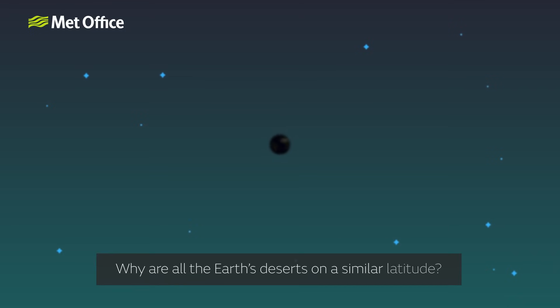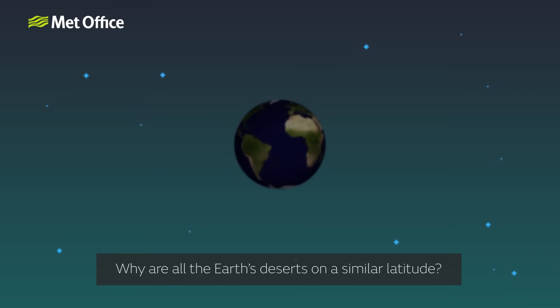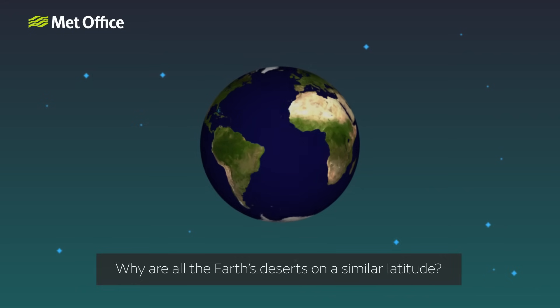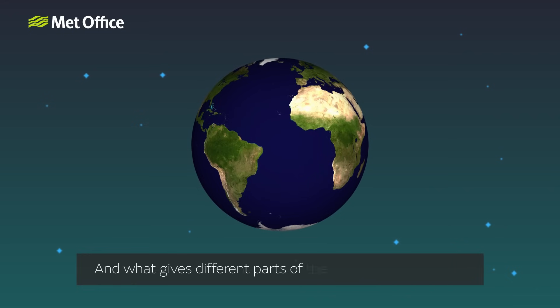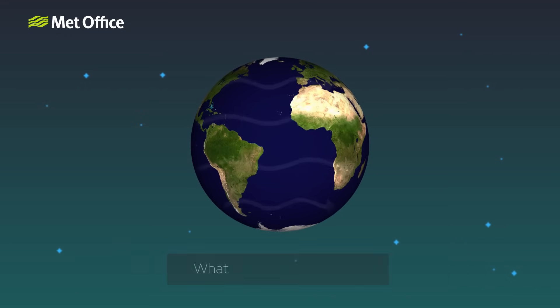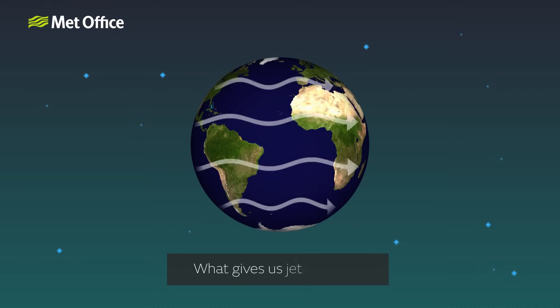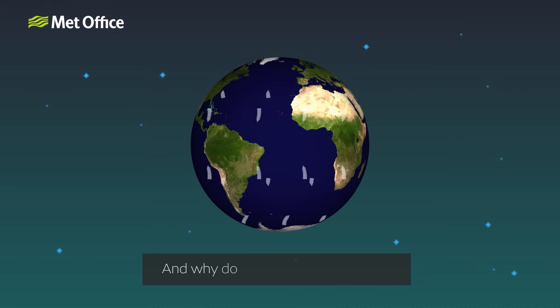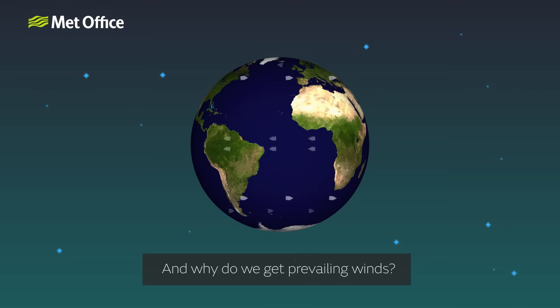Why are all the Earth's deserts on a similar latitude? And what gives different parts of the world their climates? What gives us jet streams? And why do we get prevailing winds?